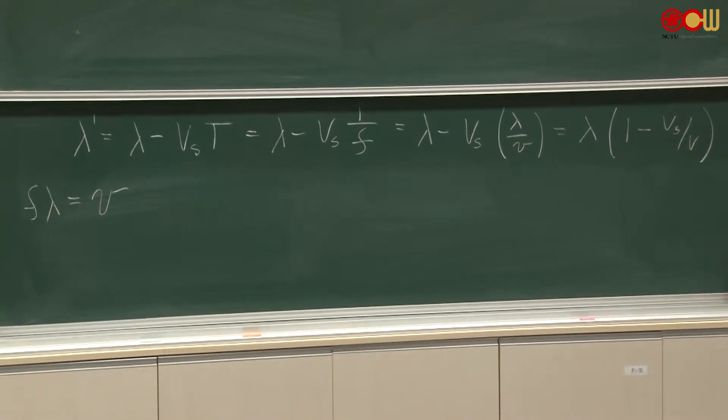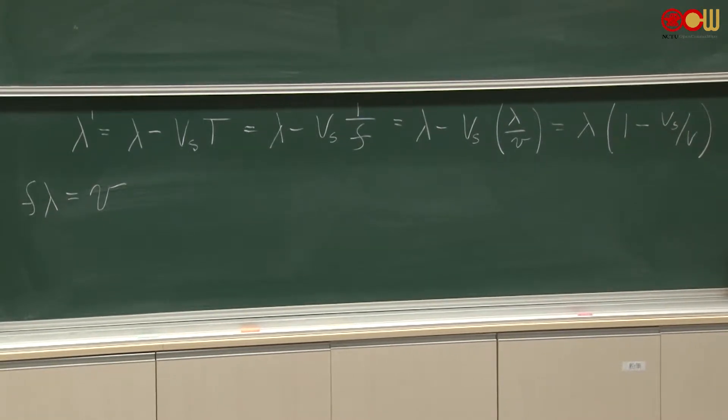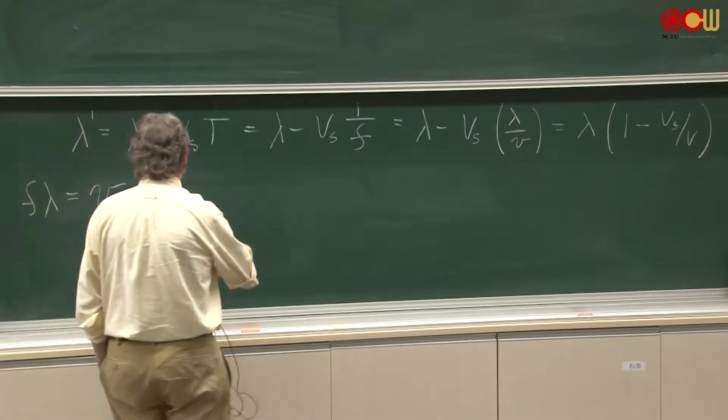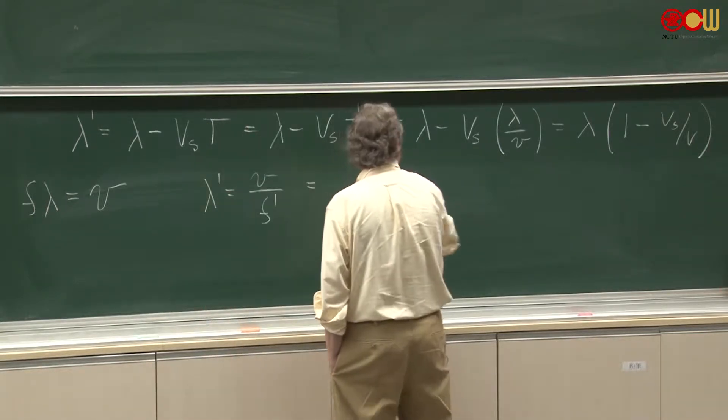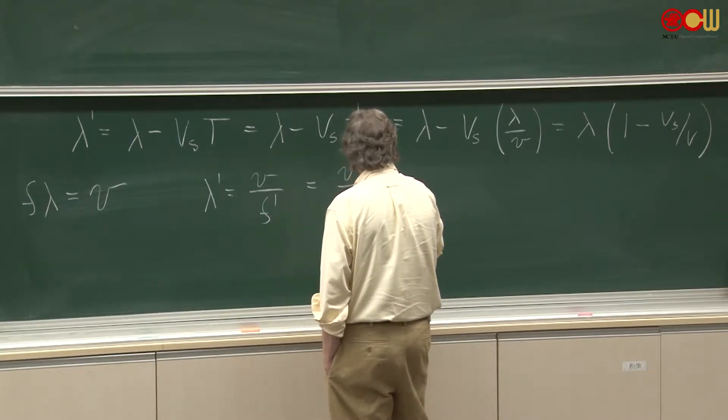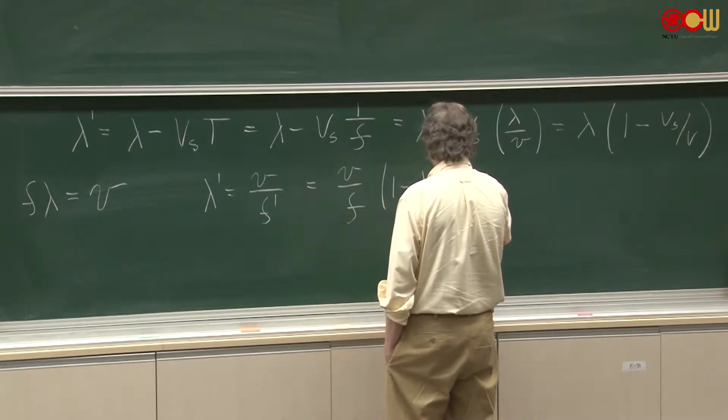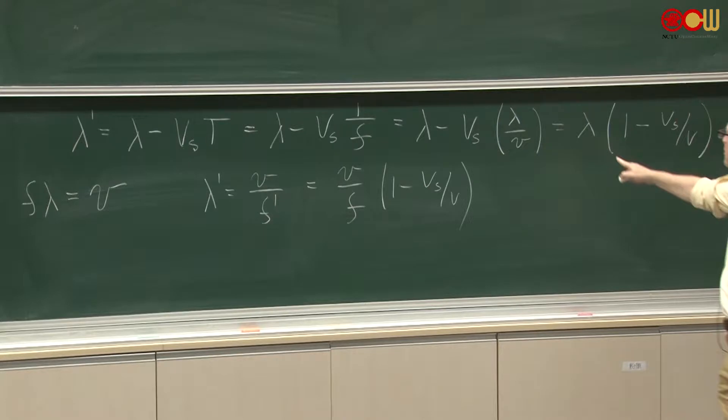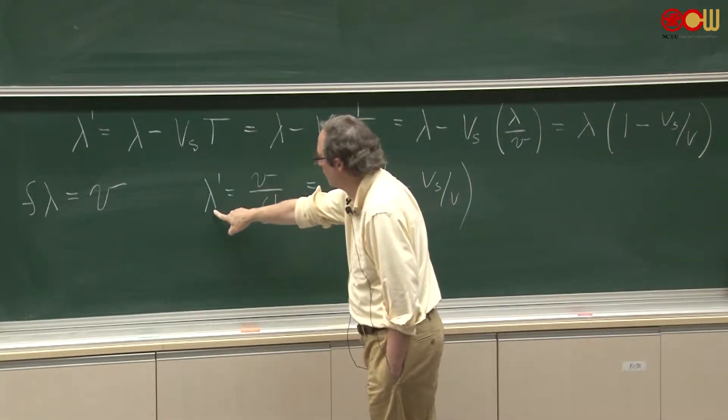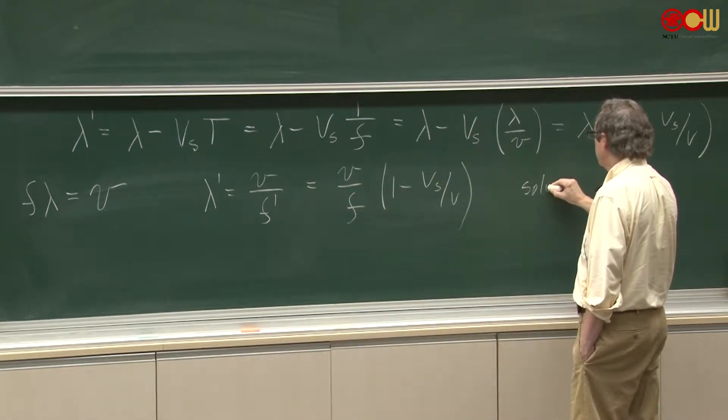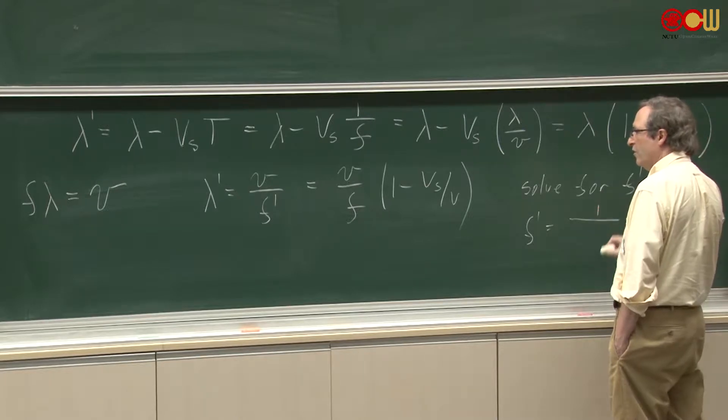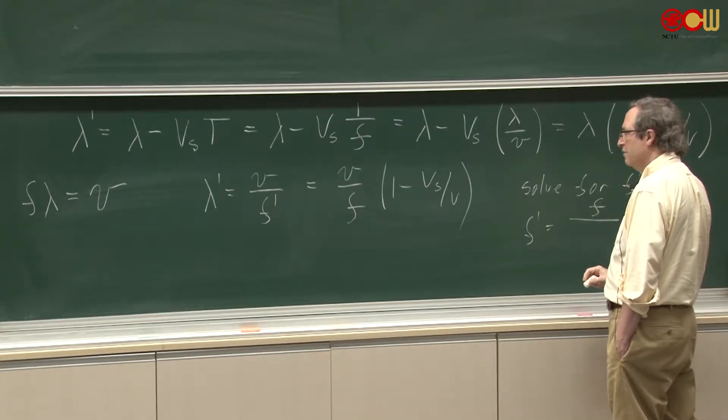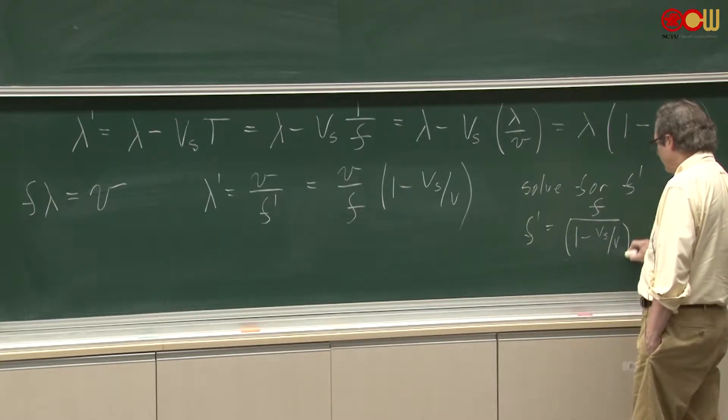Now when we're talking about sounds, and in a lot of other contexts, we don't usually measure wavelength. We talk about frequency. So we can change lambda prime equals the velocity of the wave over f prime. And I do the same here. I have velocity over f times one minus v s over v. So I just put that in there. I replace lambda here by v over f. Lambda prime by v over f prime. So solve for f prime. And what do I get? I get f prime equals f divided by 1 minus v s over v.